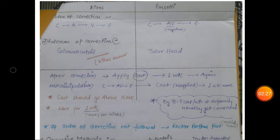So you will apply cast for one week, re-manipulate and go in the same order: C, then A and V together, then E. Cast is reapplied for one week more, and this is carried on for up to eight to nine casts for eight to nine weeks till the deformity gets corrected.